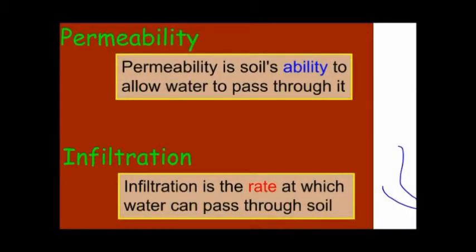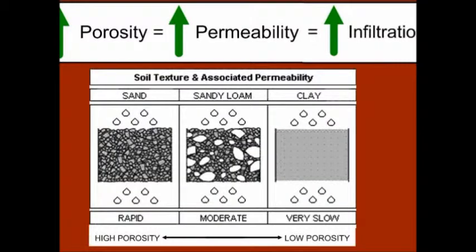Permeability is a soil's ability to allow water to pass through it. Infiltration is the rate at which water can pass through soil. Porosity, permeability, and infiltration are all directly related. So a substance like sand, which has high porosity, would have rapid infiltration and high permeability. On the right side, you can see clay has low porosity and it's going to have very low infiltration and low permeability.